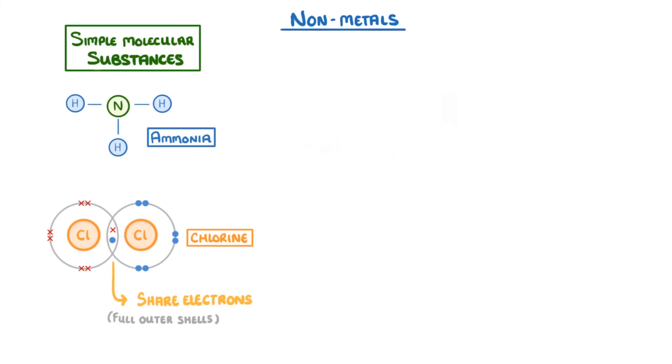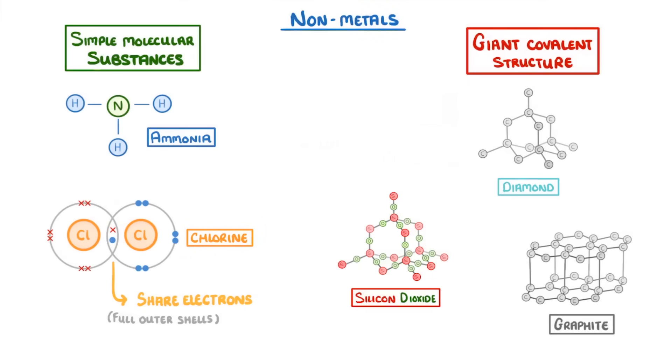In other cases though, nonmetals bond covalently to form giant covalent structures, like diamond, graphite, or silicon dioxide. And in today's video we're going to look at the respective properties of each of these, and then finish up by taking a closer look at the structure of silicon dioxide.